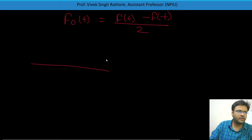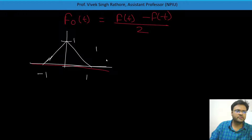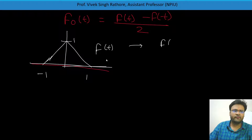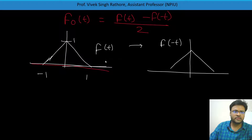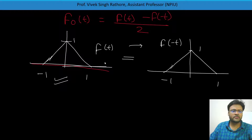I have already taken one signal ranging from minus 1 to 1 with magnitude 1. This is F(t). If you do time reversal to get F of minus t, it will just be rotated across the y-axis, and it will come back the same. So you can see F(t) equals F of minus t. Therefore this signal is called an even signal.